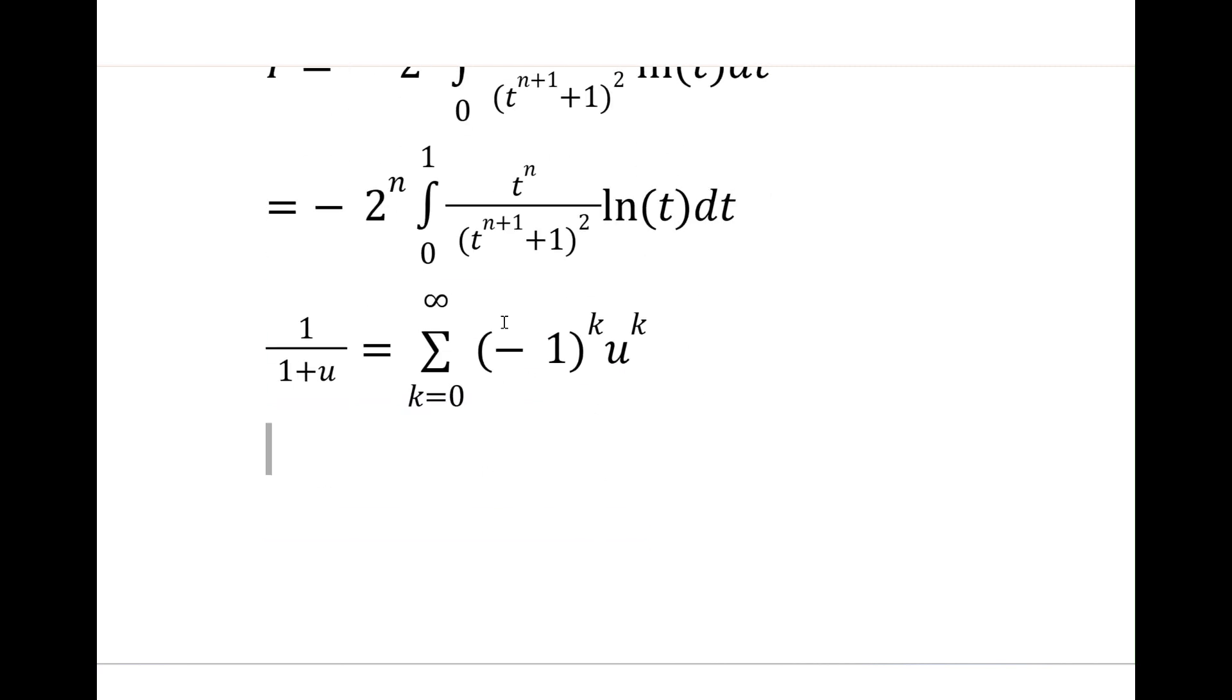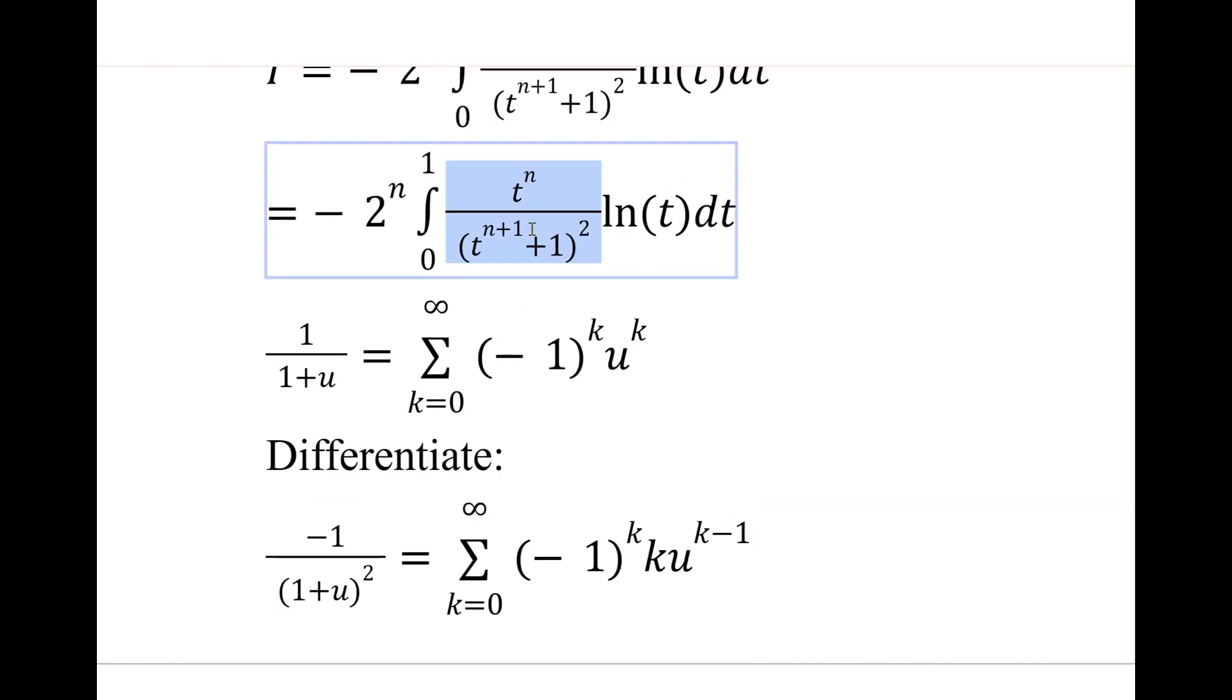We're going to differentiate both sides and that way we actually get a squared thing in the denominator. We're going to get minus 1 on 1 plus u squared. And on the other side, well you're differentiating u to the k with respect to u and that would just be the power rule.